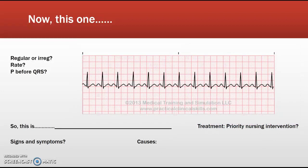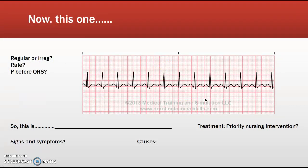Now this one. Is it regular? Yes. The rate? It's 130 either way you calculate it. P before every QRS? Yes, and it looks the same — so this is sinus tachycardia. Note: if it's greater than 150, it's called supraventricular tachycardia. What causes this? It could be stimulants like a really good espresso. It can be a compensatory demand for more oxygen or cardiac output, such as with exercise, shock, or unstable conditions. It can be secondary to epinephrine release from the adrenal medulla as the fight-or-flight response — fear, anxiety, many reasons.